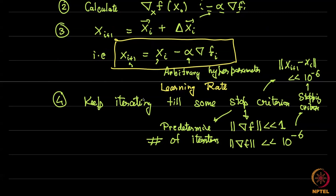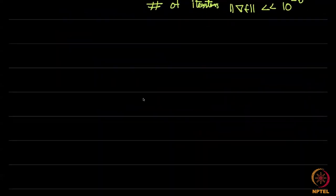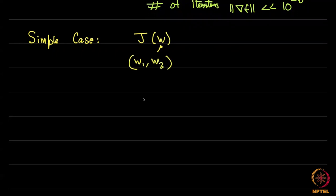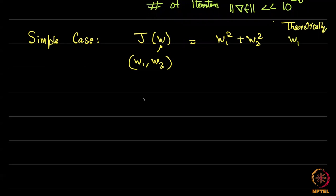This is the gradient descent algorithm. Let me show you a quick demo with a simple example where you will see the effect of alpha. Let us take j(w) where w is made up of two variables w1 and w2, given by j = w1² + w2². We already know the theoretical minimum: we should converge to (0, 0). So w1* = 0 and w2* = 0.